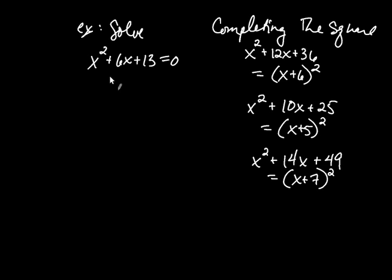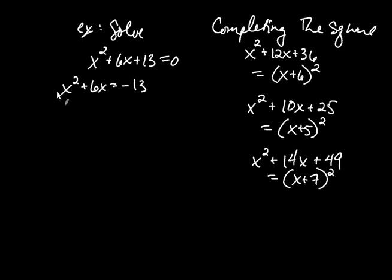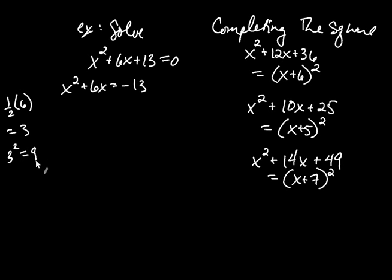Focusing on x squared plus 6x from our problem, we subtract 13 from both sides to get x squared plus 6x equals negative 13. As long as the leading coefficient is 1, take the middle coefficient 6, multiply by one-half to get 3, then square it to get 9. That's the number you add to both sides: x squared plus 6x plus 9 equals 9 minus 13. The left-hand side is now a perfect square trinomial.